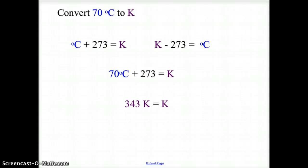The conversion from Celsius to Kelvin is much easier. We're not going to use any strange variables like 5/9 or 1.8. To change from Celsius to Kelvin, we add 273. If I need to convert 70 degrees Celsius to Kelvin, I take 70 degrees Celsius, add 273, and get 343 Kelvin.